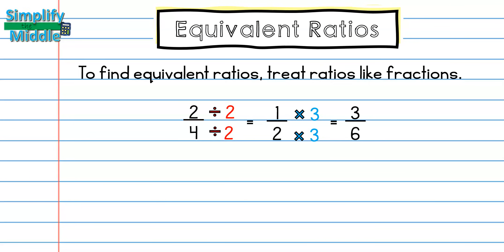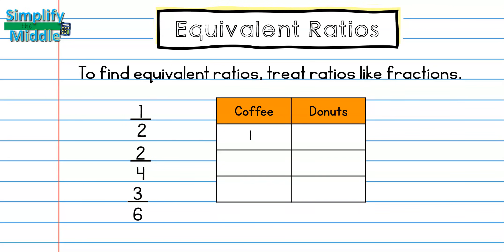We can use a table to view equivalent ratios more easily. So 1 half is the same ratio as 1 cup of coffee to 2 donuts, 2 fourths is 2 cups of coffee to 4 donuts, and 3 sixths is 3 cups of coffee to 6 donuts. This is helpful because in this real world problem, let's say that you went to the donut shop with a friend and you needed to know how many donuts you would get with 2 cups of coffee. We don't always want it to be in the simplified form for real world situations.